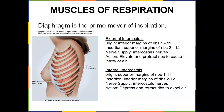We also want to talk about the internal and external intercostals. The external intercostals originate from the inferior margins of ribs 1 through 11 and insert on the superior margins of ribs 2 through 12. The internal intercostals originate from the superior margins of ribs 1 through 11 and insert onto the inferior margins of ribs 2 through 12. If you compare the two, they're almost the opposite. Nerve supply is the intercostal nerves for both. The external intercostals elevate and protract the ribs to cause inflow of air, whereas the internal intercostals depress and retract the ribs to expel air. Make sure you know the difference there.